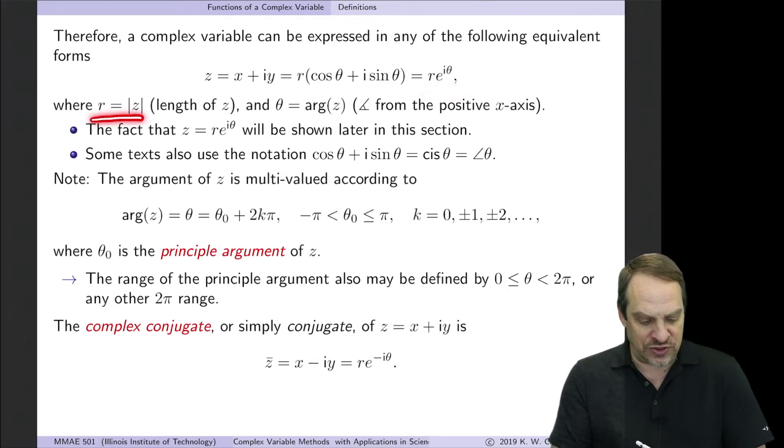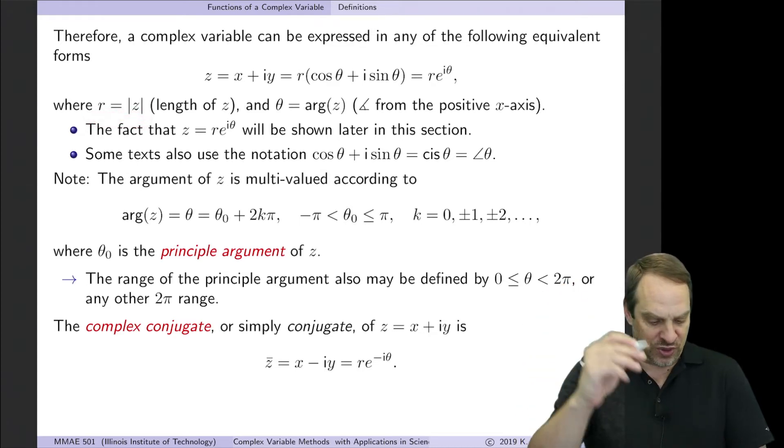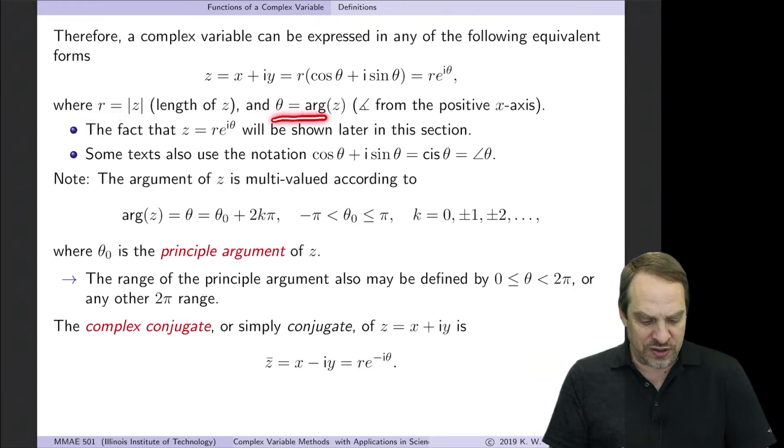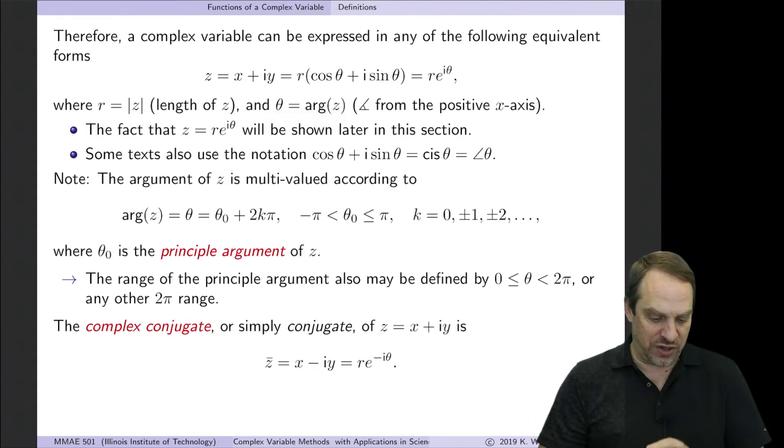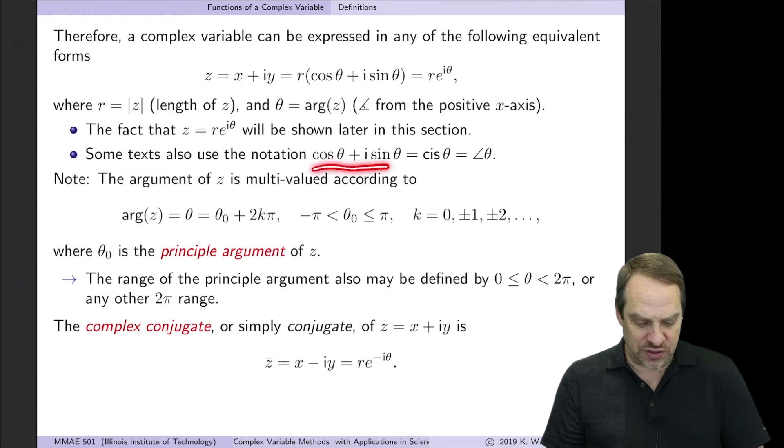So then again, R is just the modulus of Z. It's the distance from the origin to the point. And theta is the argument of Z, the angle from the positive real axis to the radial line, R. There is some different notation that you might see in certain textbooks. So I will always write out cosine theta plus I sine theta. But some authors get a little lazy because it happens a lot. And they'll write cis theta, cosine plus I sine theta, or sometimes just the angle bracket theta. And that represents this cosine theta plus I sine theta. So if you see that notation, that's what it represents.